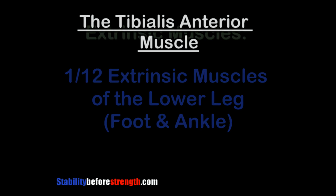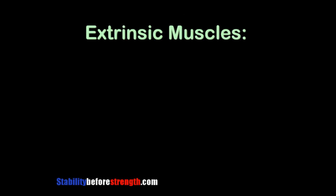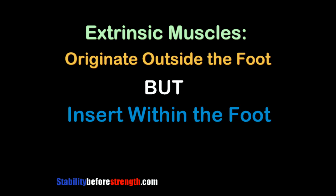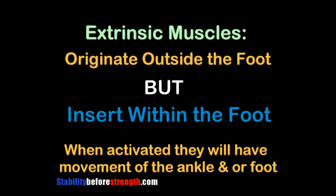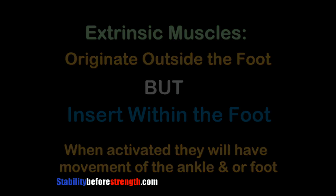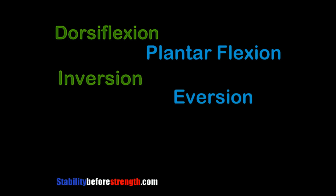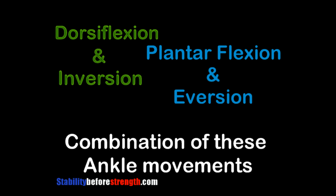These 12 muscles are called extrinsic because they originate outside the foot but insert within the foot. When activated, they produce movement of the ankle and foot — whether it's dorsiflexion, plantarflexion, inversion, eversion, or a combination of these movements.